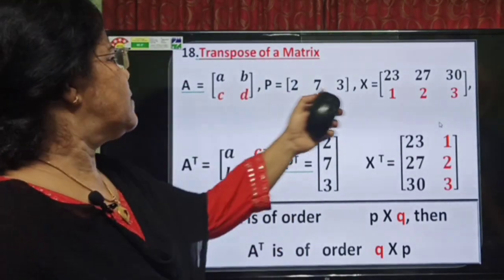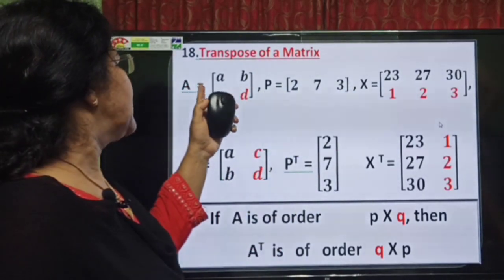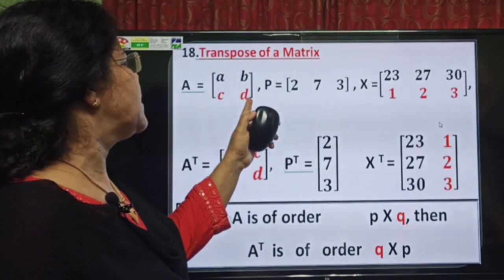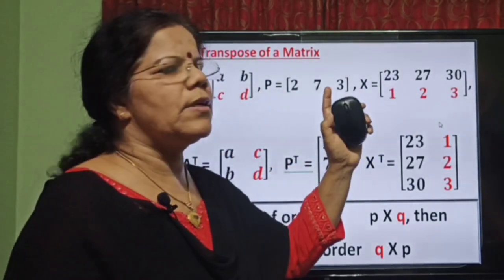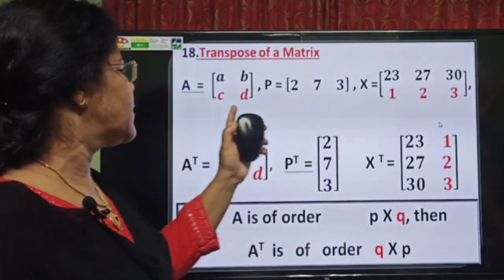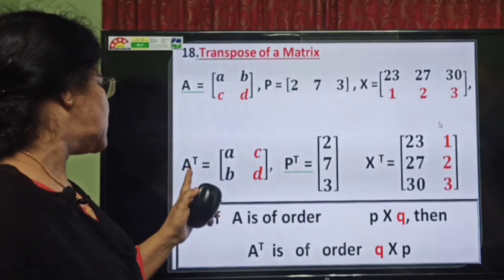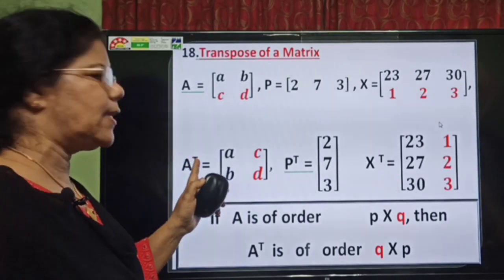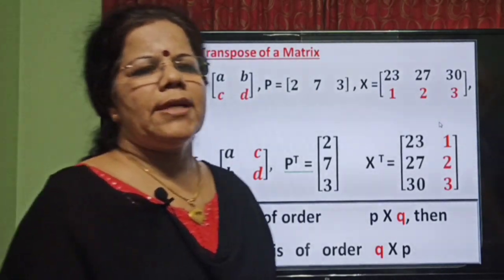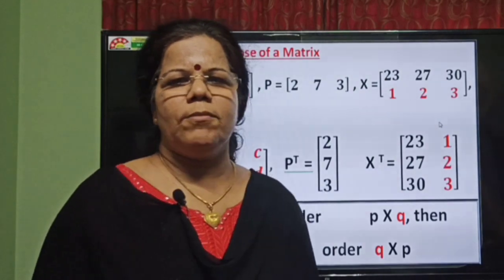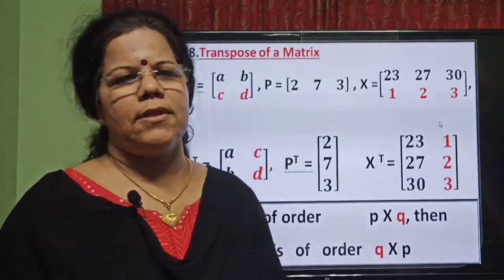Here some examples are given — matrices A, B, C, D and some more matrices of different orders. Now transpose of a matrix is denoted by A-transpose, and it is defined as the matrix obtained by interchanging the rows and columns.